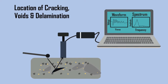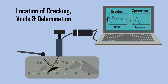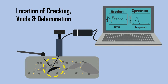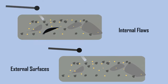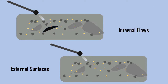Impact echo test is used to determine the location of cracking, voids and delamination. It is based on the use of impact generated stress waves that propagate through a structure and are reflected by internal flaws and external surfaces.